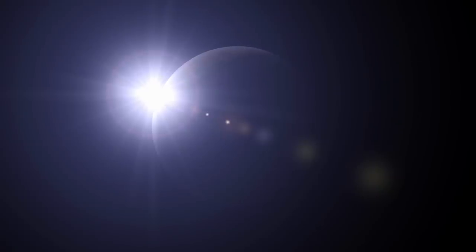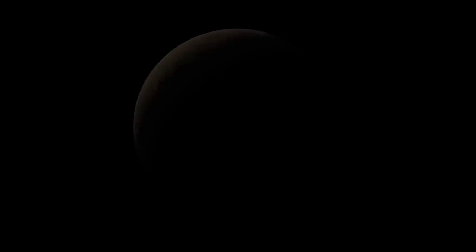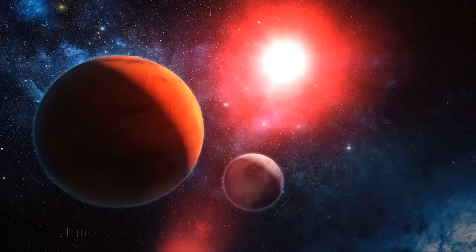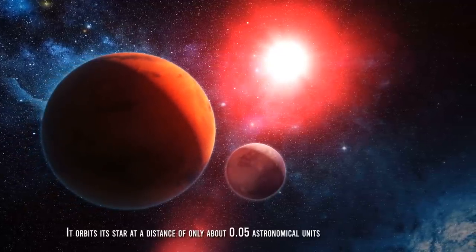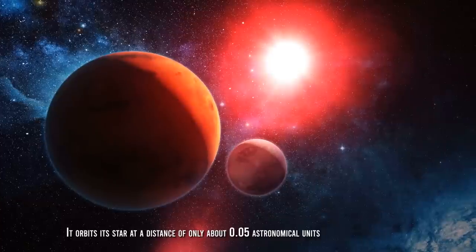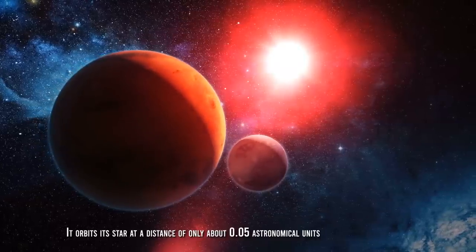One of the most interesting features of TOI-674b is its relatively close proximity to its parent star. It orbits its star at a distance of only about 0.05 AU, which is much closer than the distance between Neptune and the Sun.